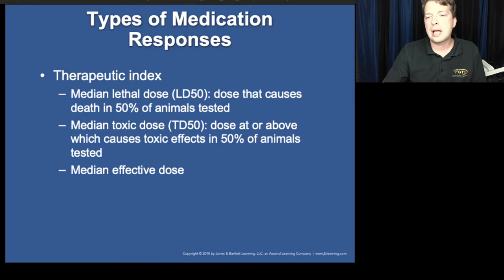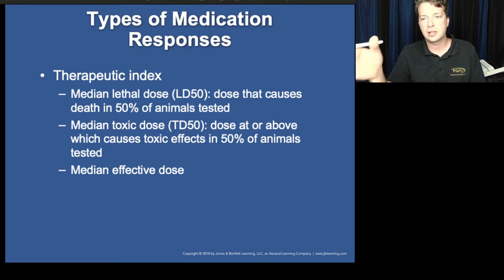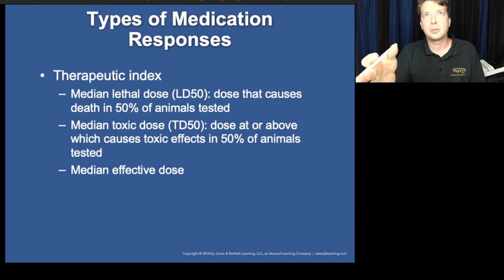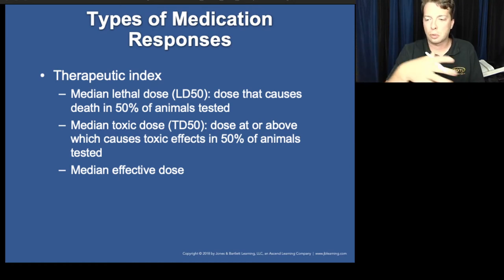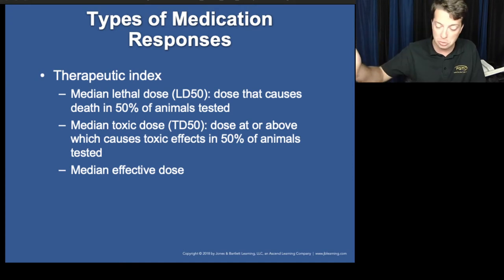There's also the TD50 — the toxic dose — where 50% of the population showed negative effects. The lethal dose is where you're going to die; the toxic dose is the high end where most people are going to have a problem. Now, one important point about medication safety: we find a dose somewhere in the middle — the median effective dose. The difference between the median effective dose and the LD50 varies by medication.